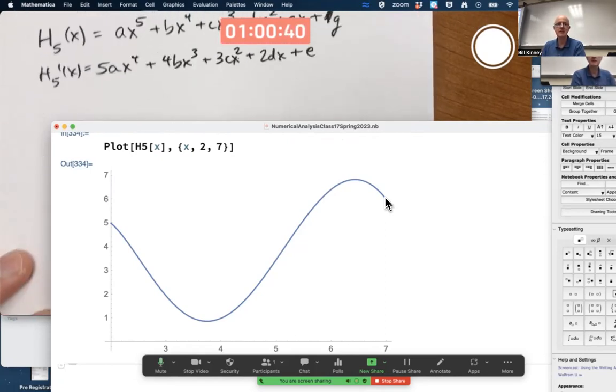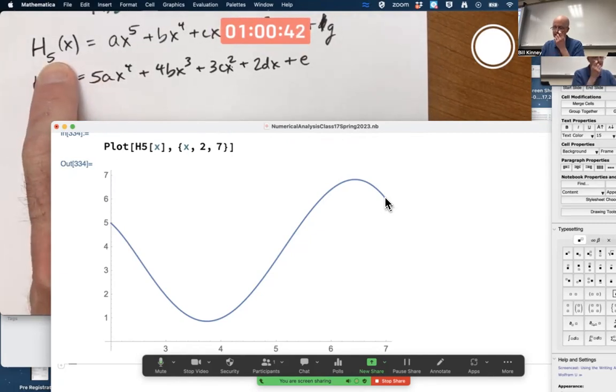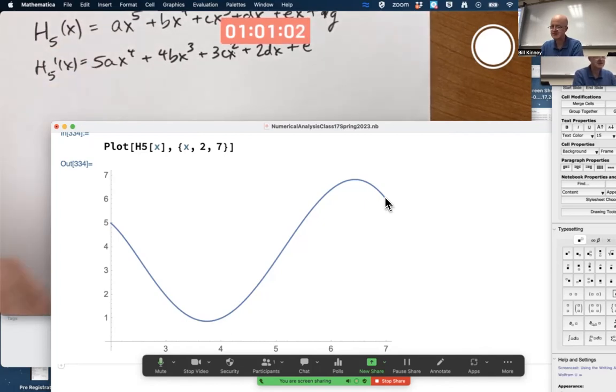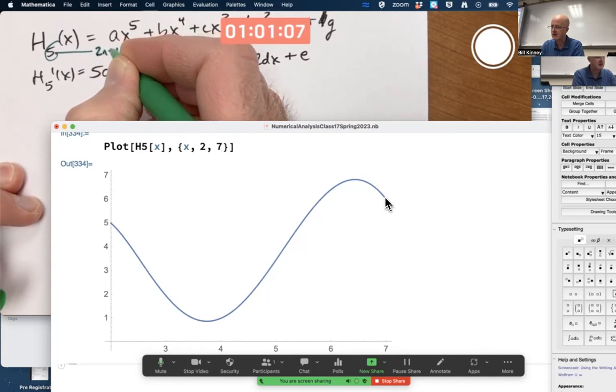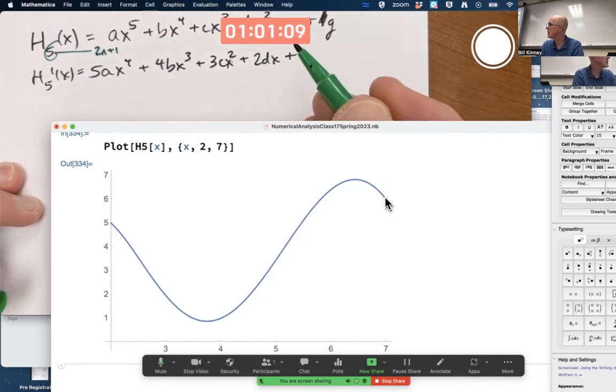In general, the polynomial that you need is 2n plus 1 when you've got n plus 1 nodes. You've got three nodes here. n plus 1 is 3, so n is 2. 2n plus 1 then would be 2 times 2 plus 1 is 5. You'll see that in the book. This is, in general, 2n plus 1 when you've got n plus 1 nodes. The last subscript is n.